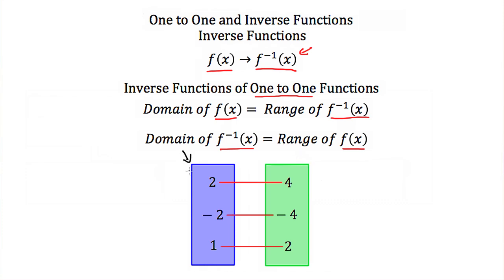For example, if my function has domain values of 2, -2, and 1, and range values of 4, -4, and 2, then my inverse function will have domain values of 4, -4, and 2, and range values of 2, -2, and 1. In short, if you plug the outputs of f(x) into the inverse function, you get back the original inputs.